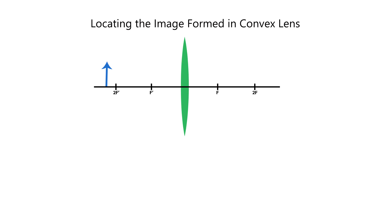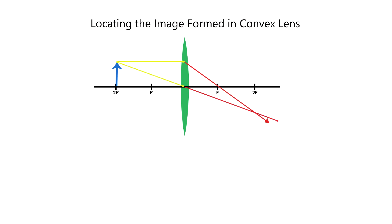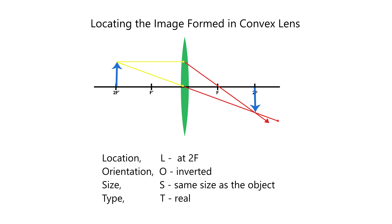Then we move the object exactly at 2F prime of the lens and do the ray diagram. The image is located at 2F, inverted, same size as the object, and real.